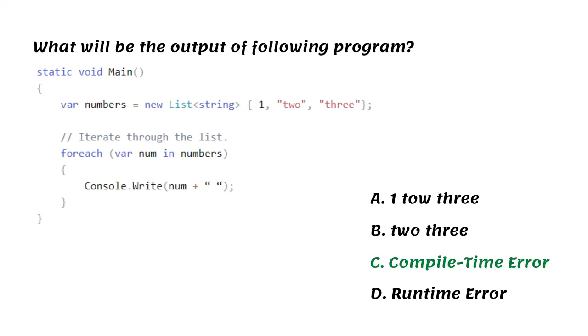Here, numbers is a generic list of string type, so adding an integer to it will give a compile time error.